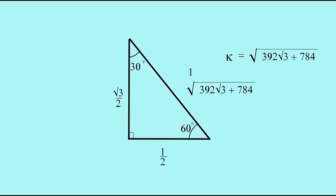We can then apply that to the triangle. The hypotenuse is k, which is √(392√3 + 784). The short side is half of that, which is √(98√3 + 196). The other leg is (√3/2)k, which is √(294√3 + 588).